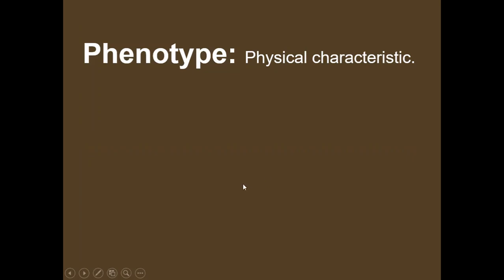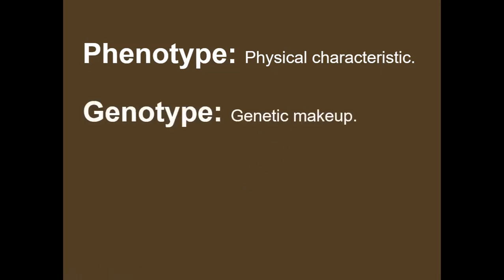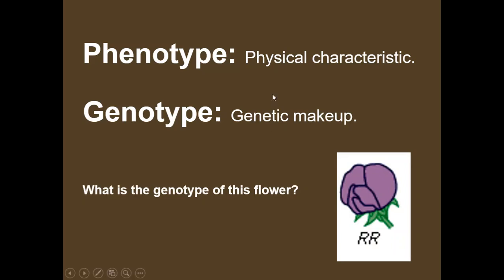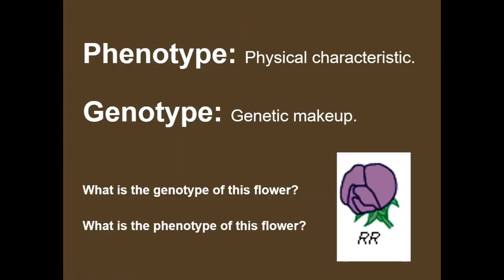Another important word: phenotype — that is the physical characteristic. Genotype means the actual genetic makeup. What would the genotype be for this flower? The genetic makeup would be big R, big R. And the phenotype — the physical characteristic — would be purple.